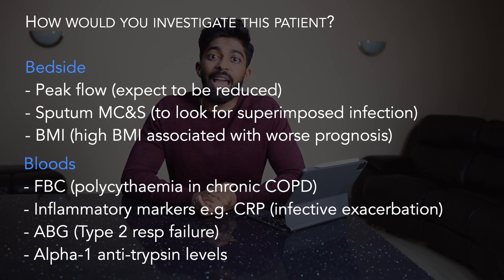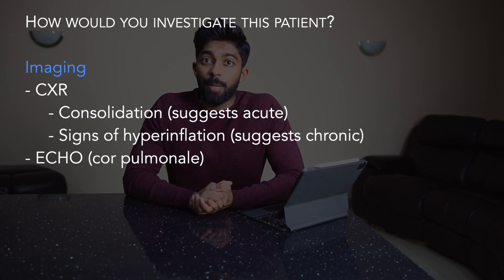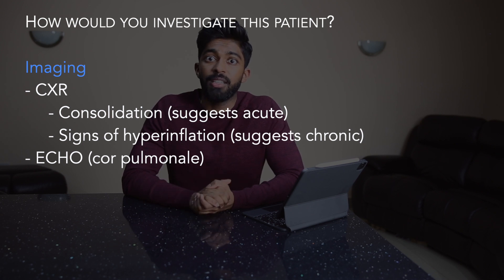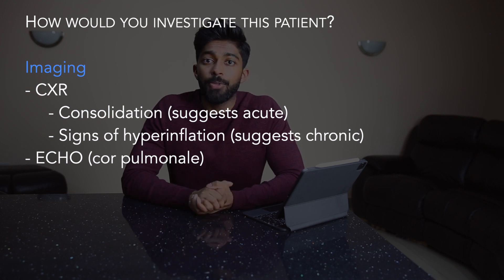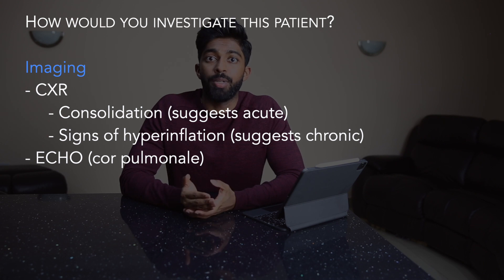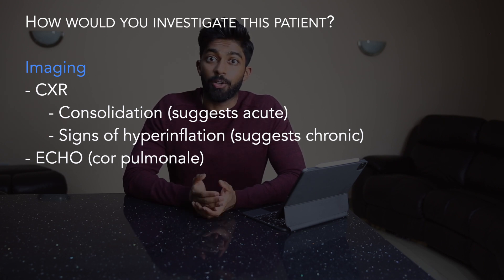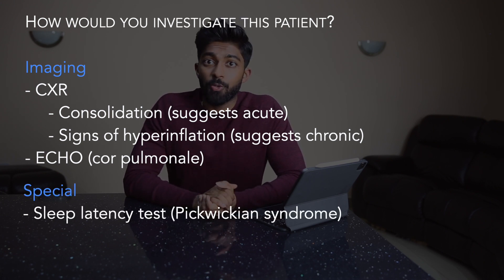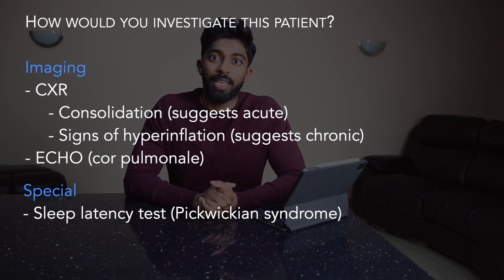For imaging, I'd start with a chest X-ray to look for signs of consolidation suggesting an acute exacerbation, and also for signs of hyperinflation, such as more than 6 anterior ribs visible or a flat diaphragm, which would likely be present in chronic COPD patients. I'd then do an echocardiogram to look for signs of cor pulmonale, one of the complications we mentioned earlier. Finally, I'd do sleep latency tests if I was suspecting Pickwickian syndrome.